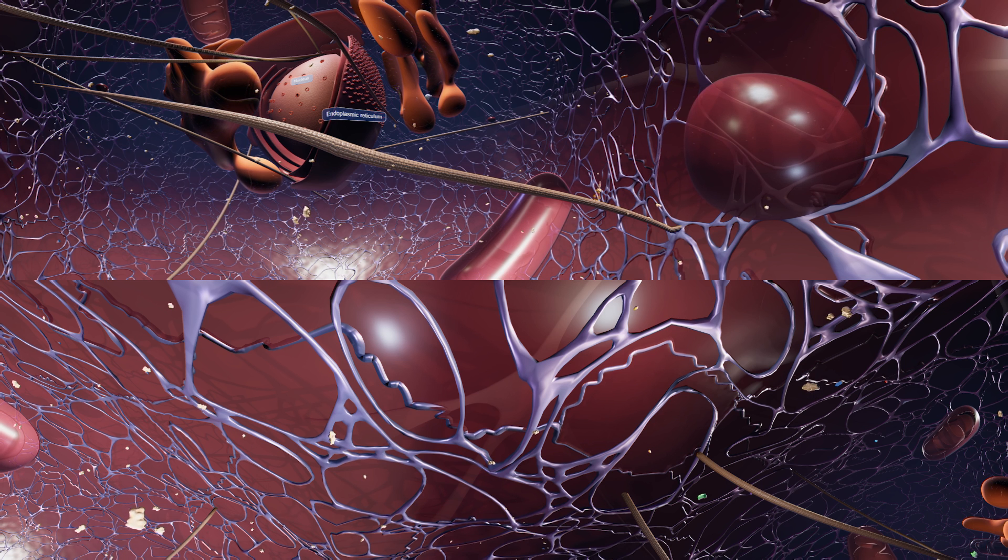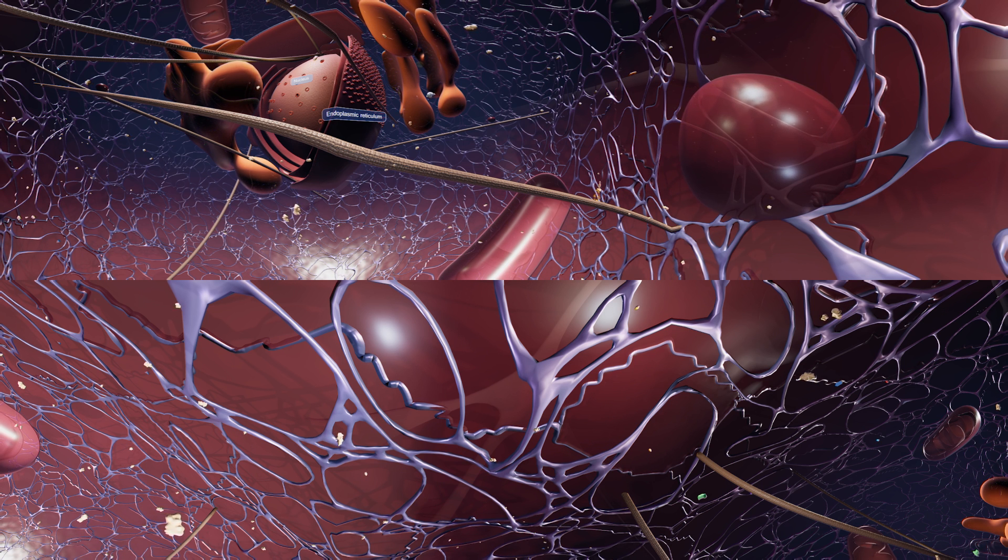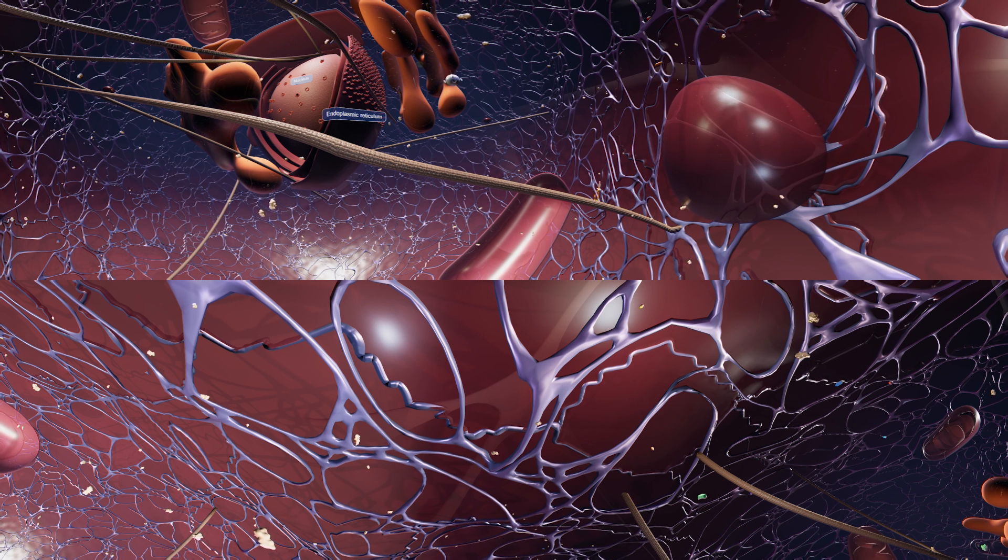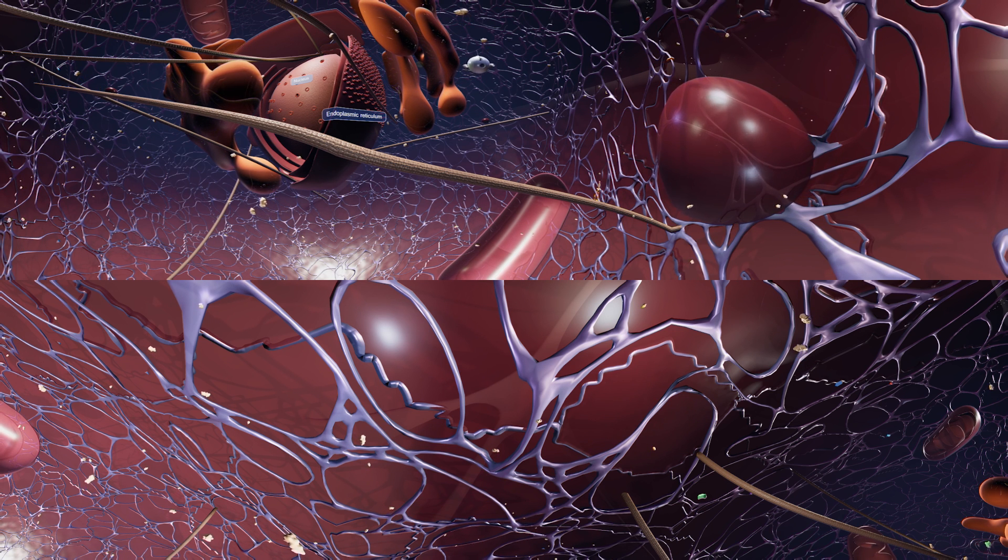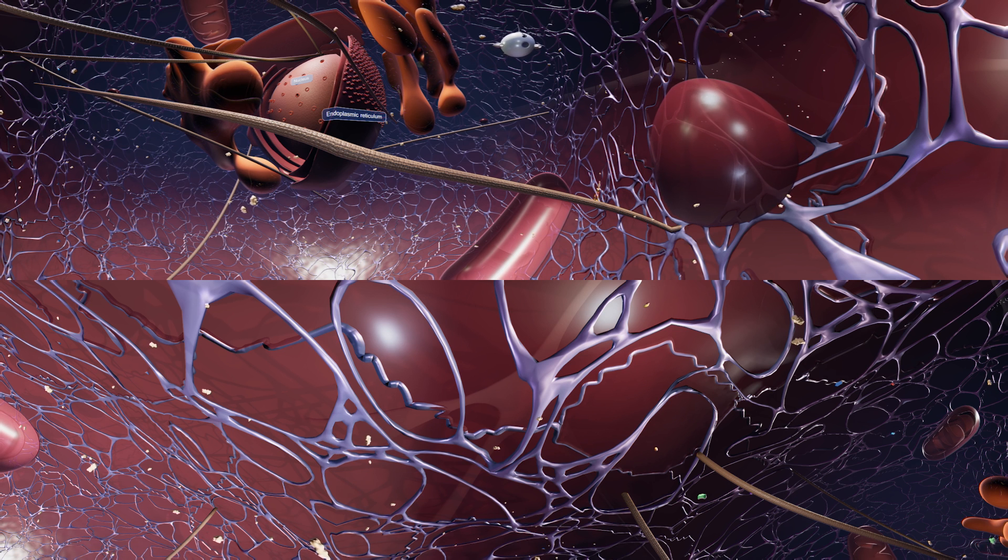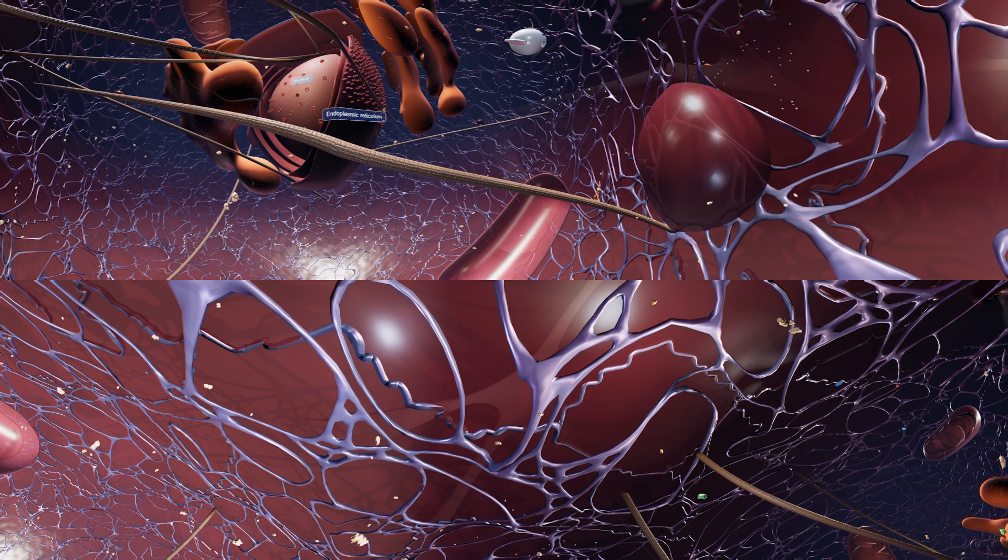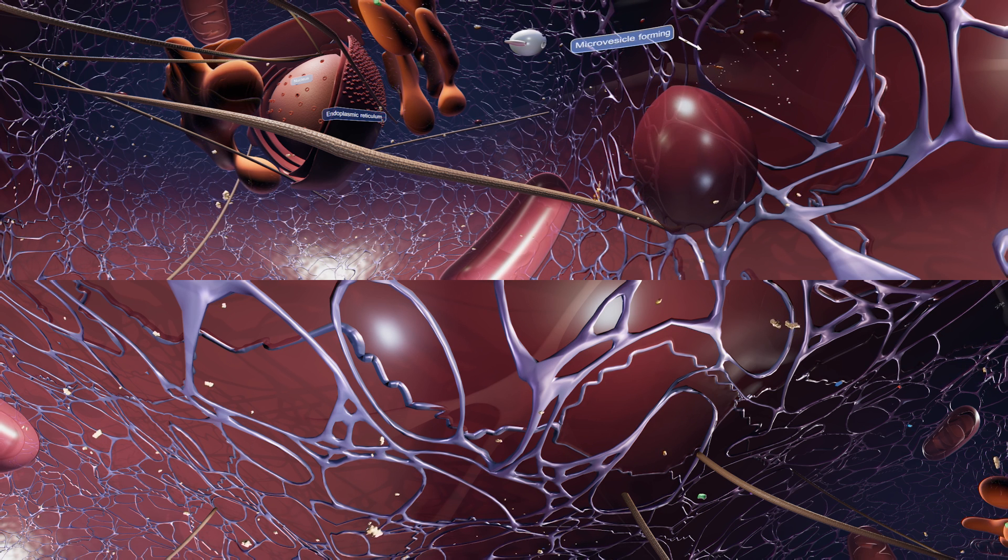The way in which cells function and communicate is not fully understood. One aspect of cell function which has only recently been looked at is the role of extracellular vesicles or EVs. EVs are small fatty bags carrying cargo which are released by cells and it turns out they have many important roles. They can be formed in various ways.